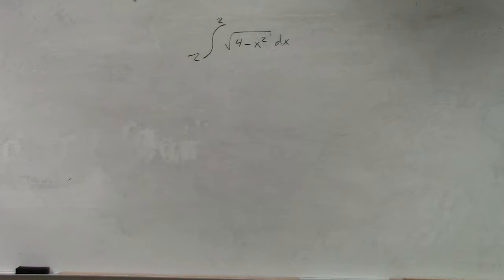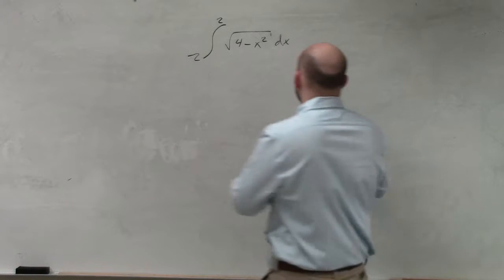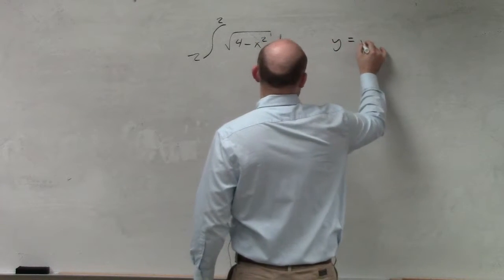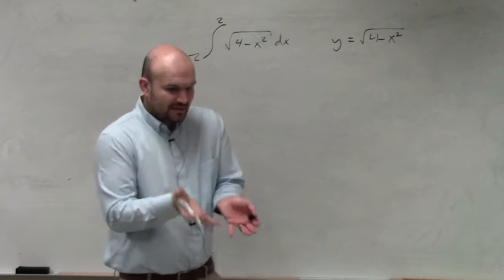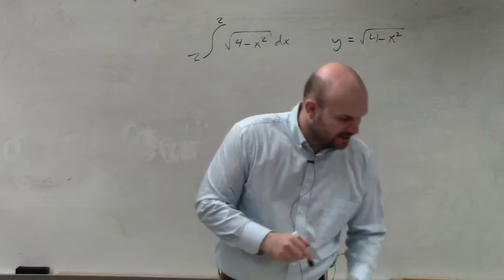So the main thing is, I'm just going to rewrite this equation here as y equals the square root of 4 minus x squared, because we want to see exactly what is this graph producing.